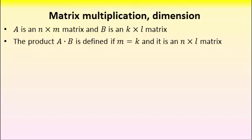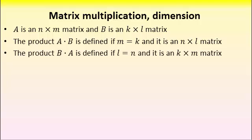So B times A is defined if B has the same number of columns as A has rows. That is, if L is equal to N. And the resulting matrix B times A will have as its dimension the same number of rows as B, that's K, and the same number of columns as A, and that's M.